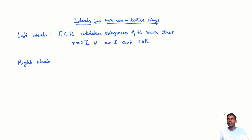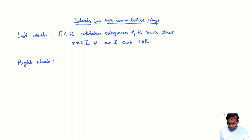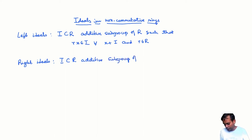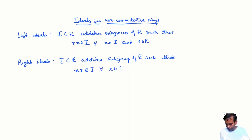This condition looks exactly the same as the definition of an ideal in a commutative ring, but there is a different variant where we put the r on the right. A right ideal is an additive subgroup of R such that xr belongs to I for all x in I and r in R.